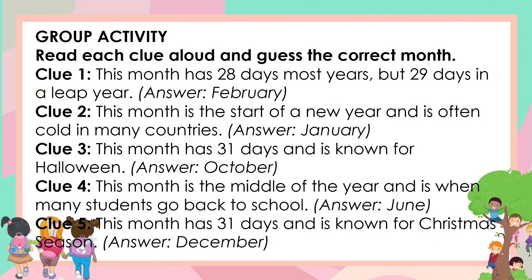Now, let's have a group activity. Read each clue aloud and guess the correct month. For clue number one, this month has 28 days most years, but 29 days in a leap year. For clue number two, this month is the start of a new year and is often cold in many countries. For clue number three, this month has 31 days and is known for Halloween. For clue number four, this month is the middle of the year and is when many students go back to school. And for clue number five, this month has 31 days and is known for the Christmas season.